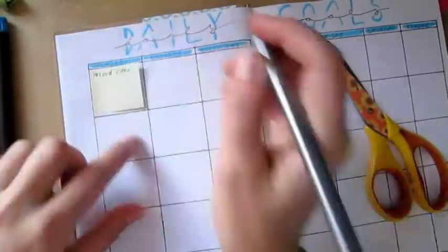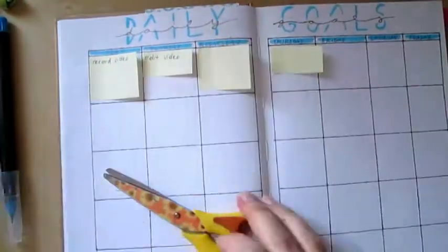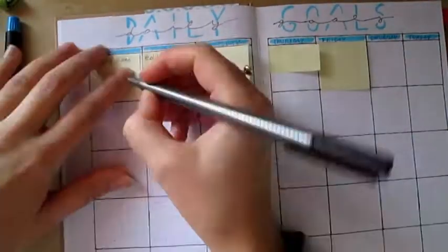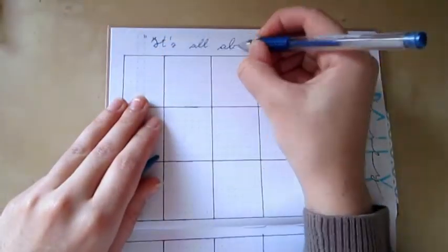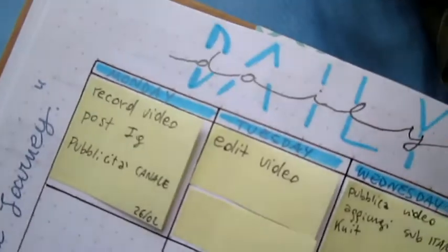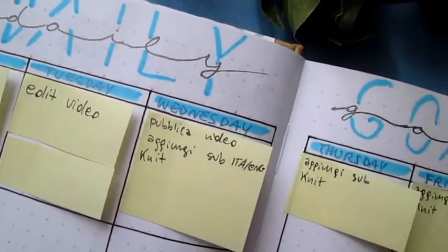But if you don't want to write the grid every month, you can do what I'm doing here. You can use post-its, so in this way, I don't have to cancel the dates and rewrite them every time. When I complete the goal, I remove the post-it.